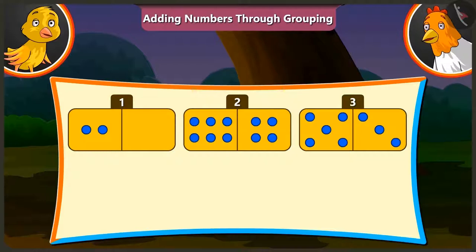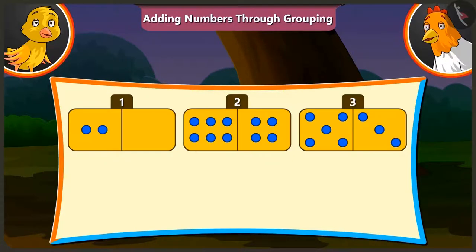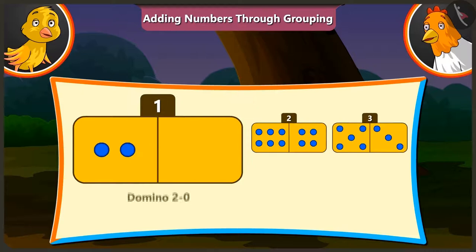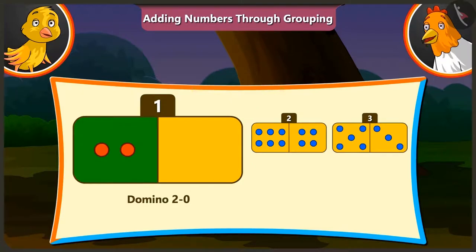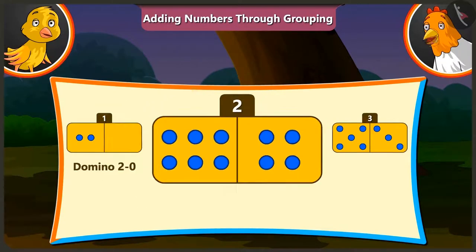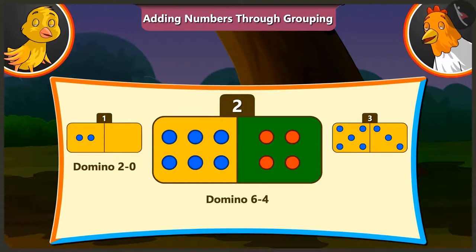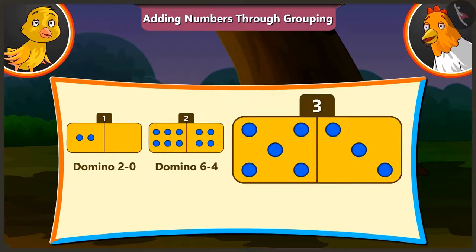Pilu, look! There are three domino cards kept here. The first card is domino 2, 0. The second card is domino 6, 4. And the third card is domino 5, 3.